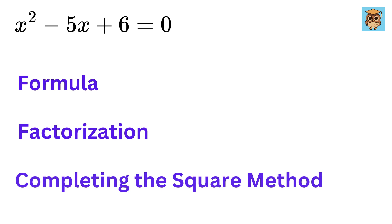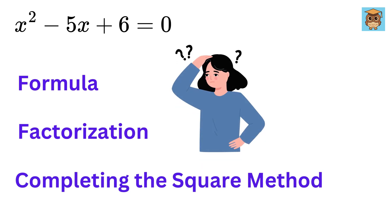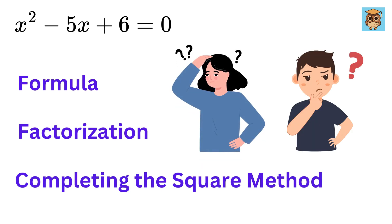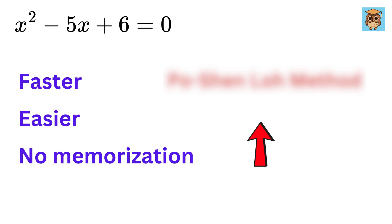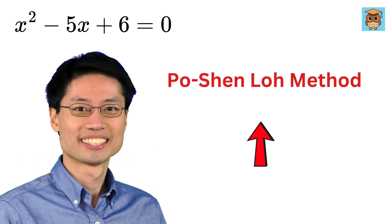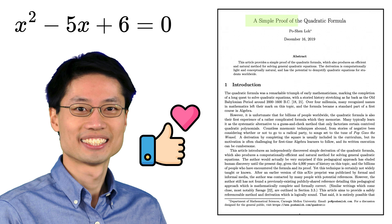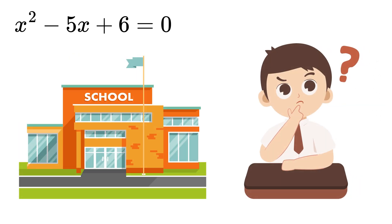But all of them require you to either depend upon your memory or using a guess and check method. But what if I told you there's another method that is faster, easier to understand, and doesn't depend so much on memorization or trial and error? This is the Po Shen Lo method, an elegant way to solve quadratic equations that focuses on logic and symmetry. And I wonder why they never teach that in school.